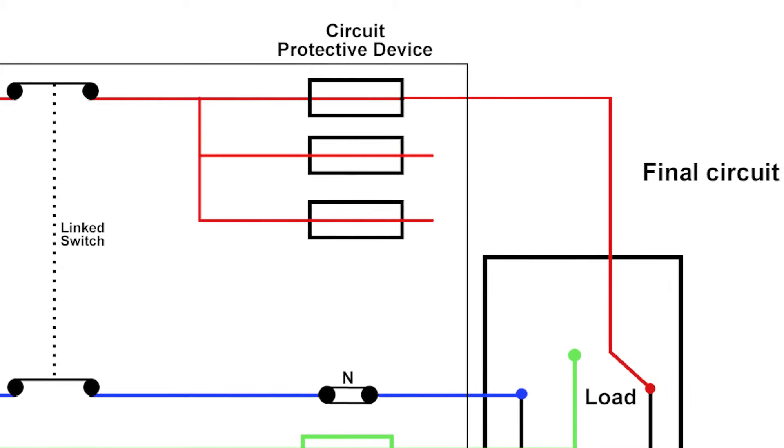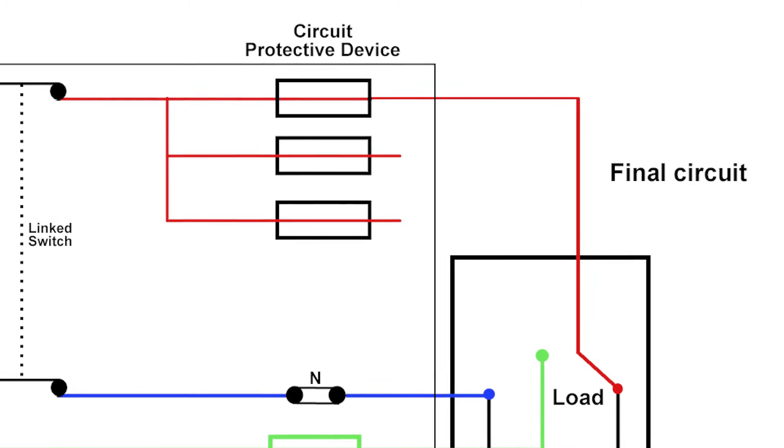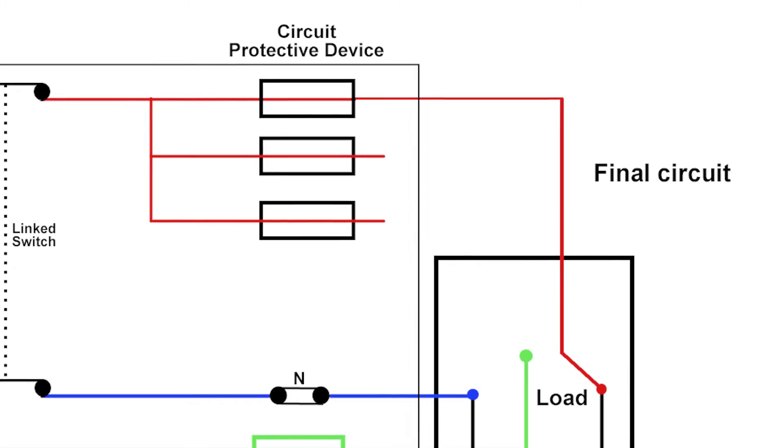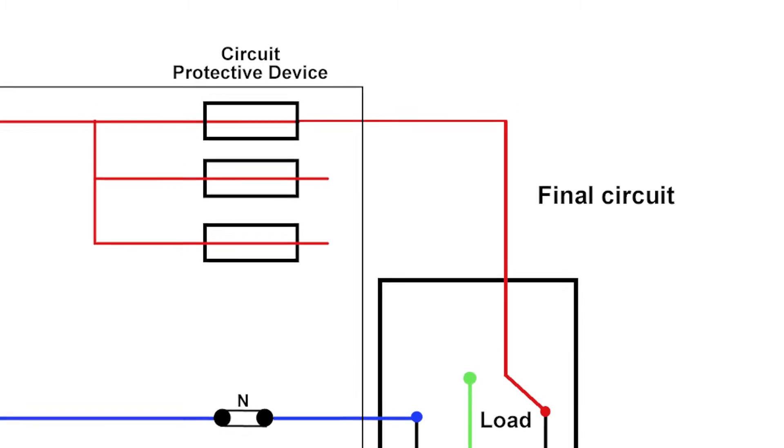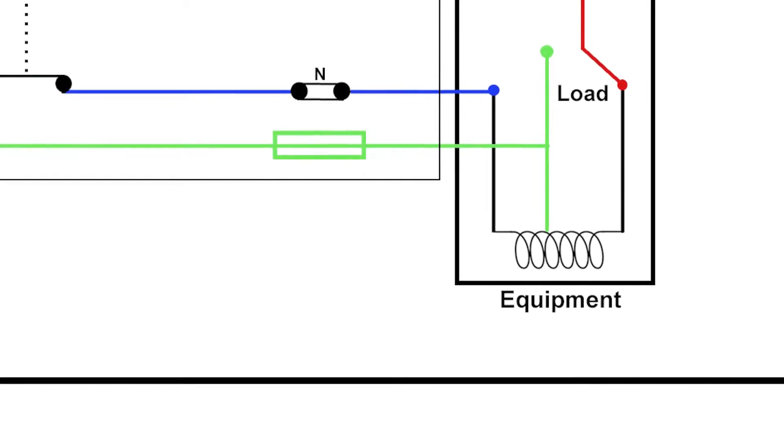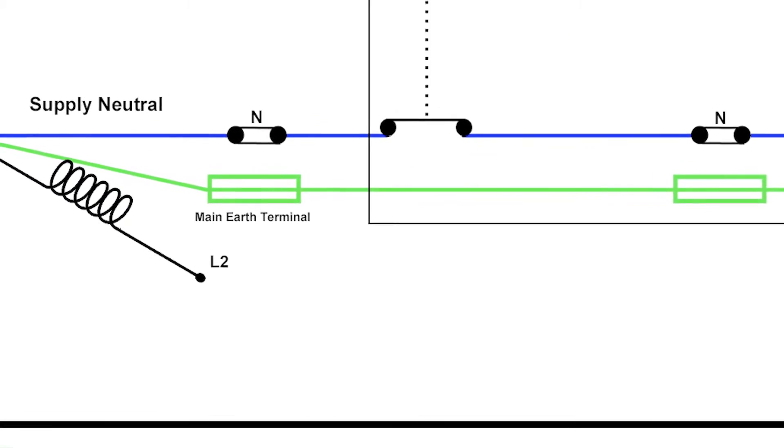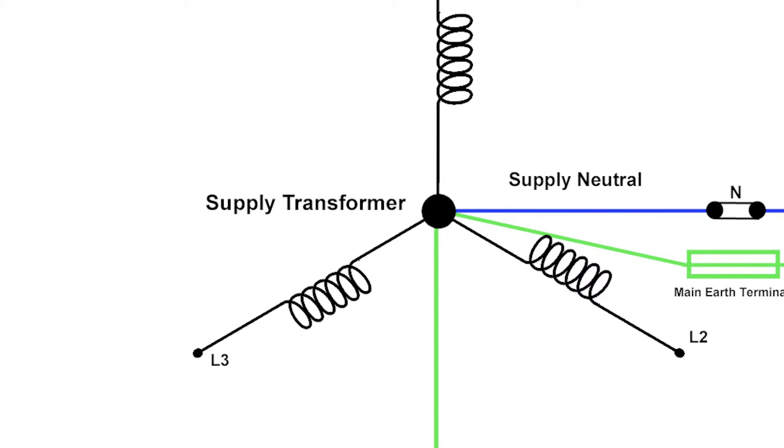Past the main switch, we've got a consumer unit which will have a selection of protective devices in. If I connect a piece of equipment to the final circuit, the current will flow through the protective device, through the final circuit which possibly I've wired, through our piece of equipment and through to the star point of our transformer, which is generally around zero volts.